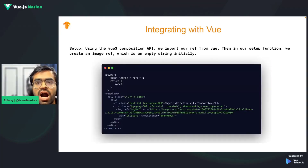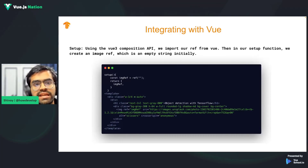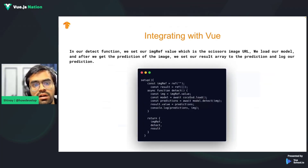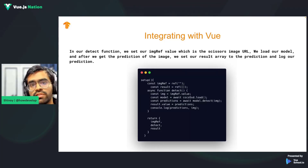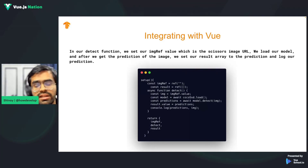Here's how this entire integration works. We're utilizing the Vue 3 Composition API, where we import ref from Vue. Inside our setup function, we create the image ref and add the results, the model, and the images we're going to use. Once you load your image, you call your model and wait for it to load. Once loaded, you pass the image as input to the model, the model returns predictions, and you expose those predictions for whatever you want to do.